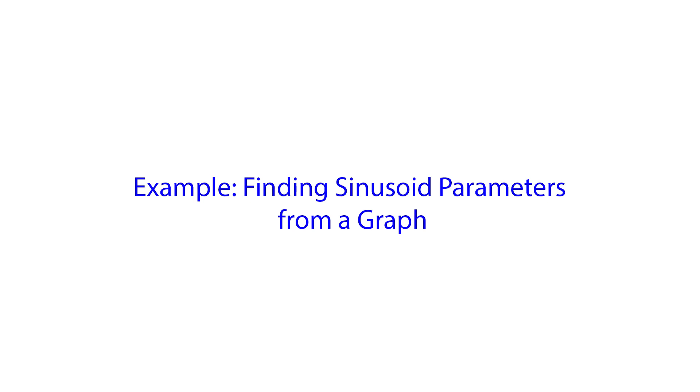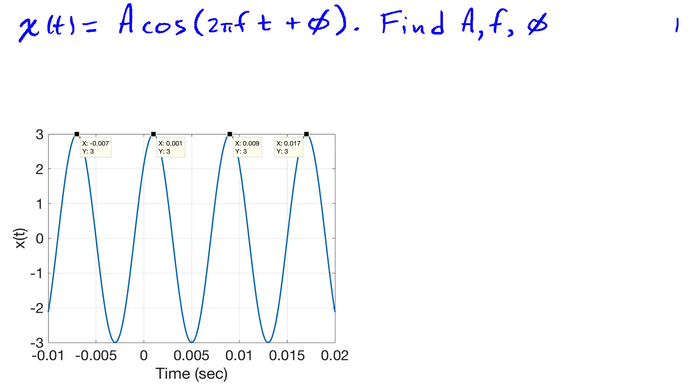In this short video, I'm going to work an example of finding the parameters of the sinusoid from the graph of the sinusoid. We have a sinusoid x of t equals A cosine of 2 pi f t plus phi, and I'm interested in finding the amplitude A, the frequency f, and the phase phi given the graph of the sinusoid, which I've shown down here.